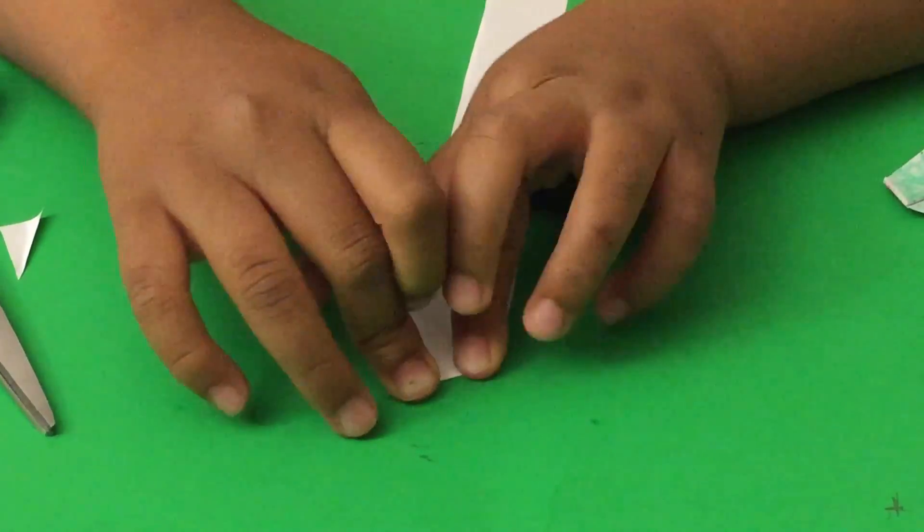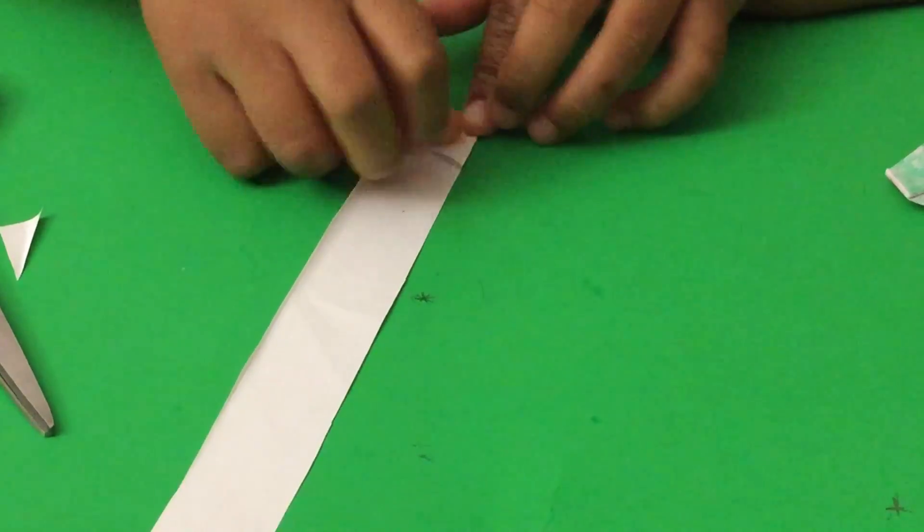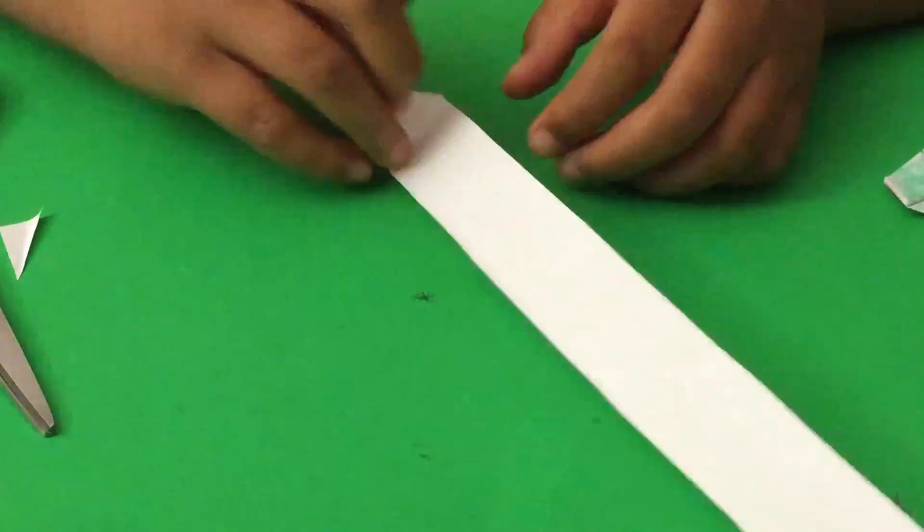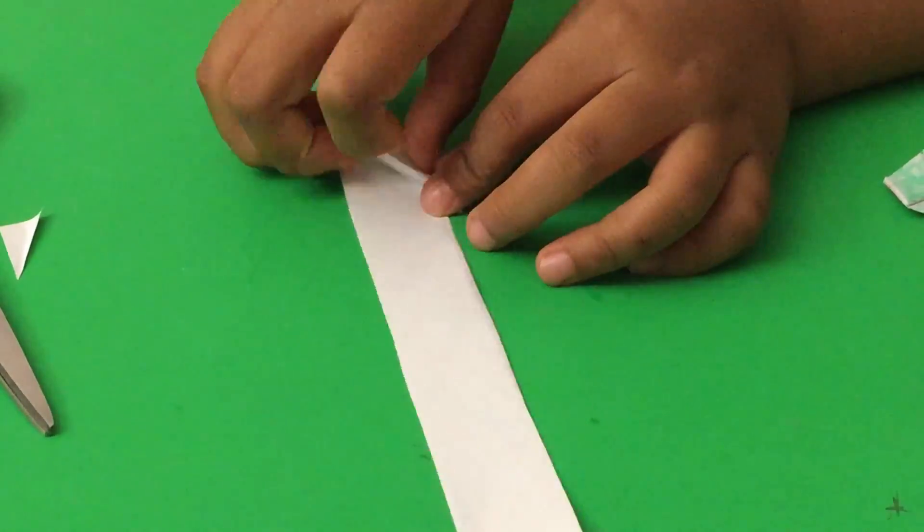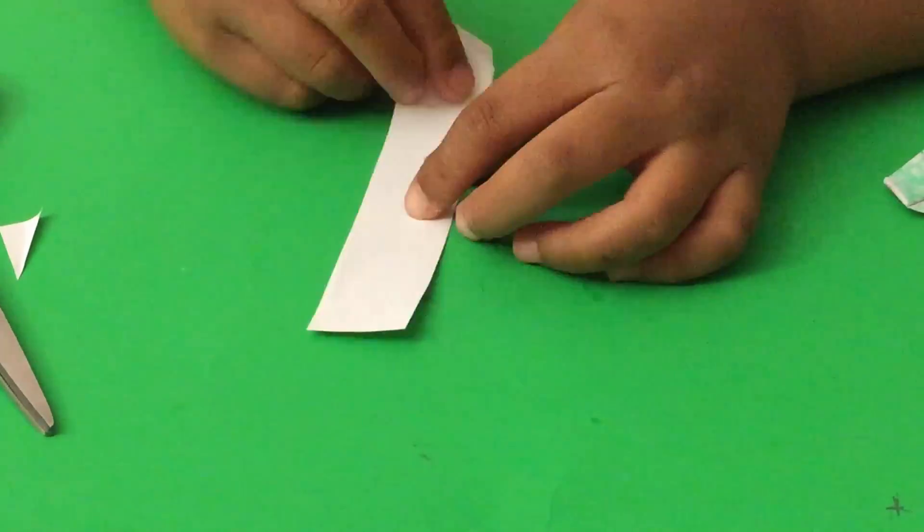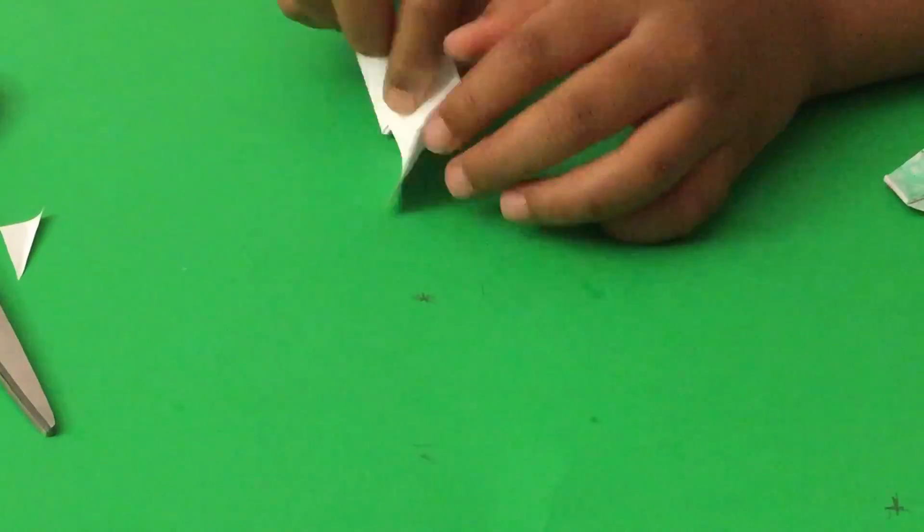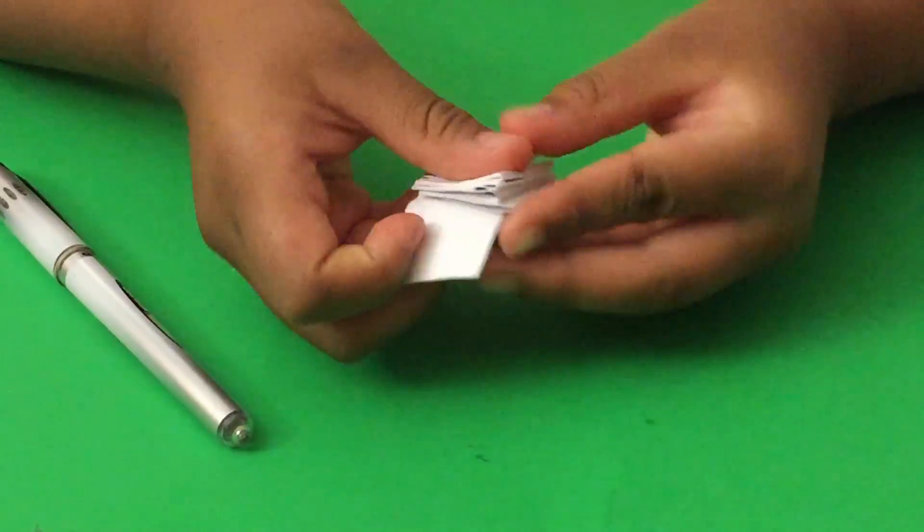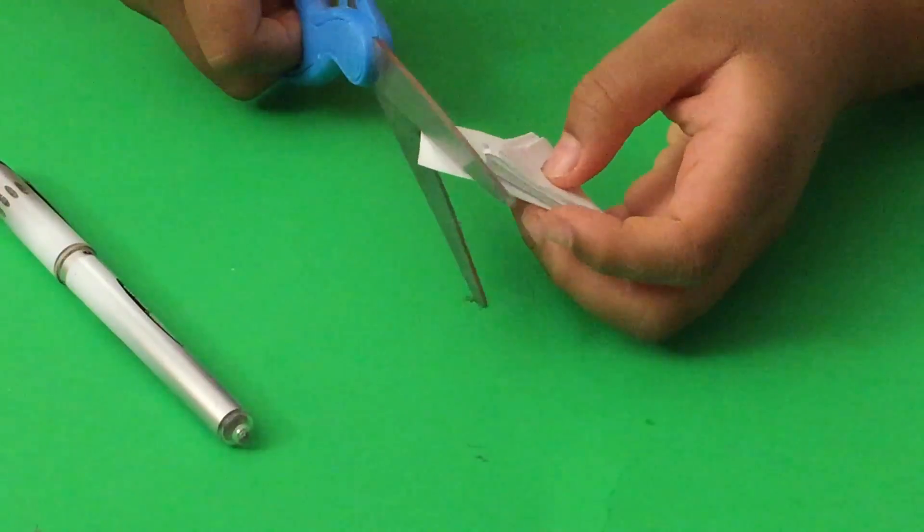We fold back and forth. After you have folded all the triangles, cut off the extra.